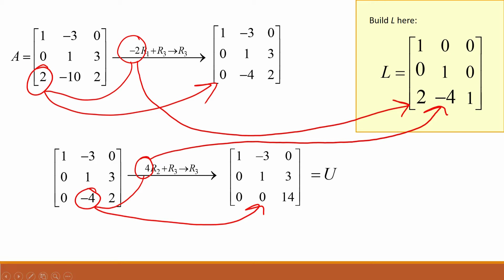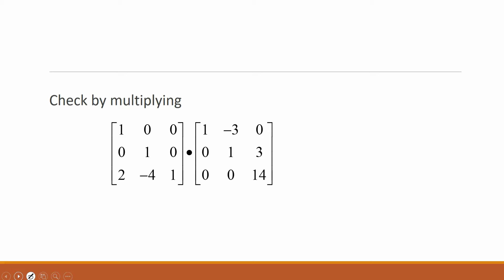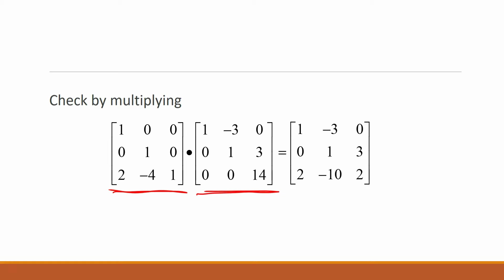In order to check that L and U are correct, find the product of the two matrices. This product should be equal to the original matrix A. After a simple matrix multiplication, we see the product of L and U is equal to our original matrix A.